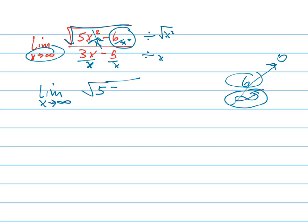So what this turns into is just square root of five minus zero. And the x's cancel, and it's three minus five over infinity, which is zero. So it's just the square root of five over three.